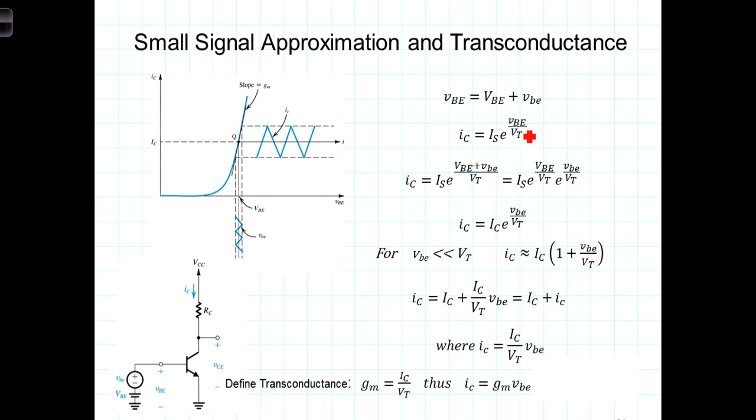I_C then is just equal to I_S*e^(V_BE/V_T). Replacing V_BE with that brings us to the total current in the collector consists of the DC component and the AC component is given by this term. We can use the property of exponents, the multiplication property of exponents, to break this out into two separate exponential terms. And as we do so, we recognize that that term right there is the DC or the bias current at the collector.